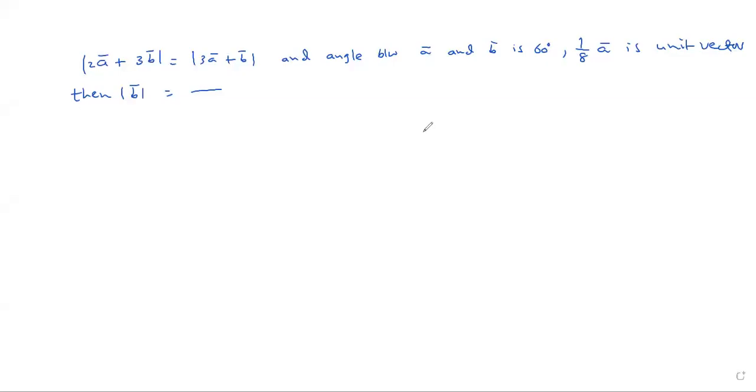So, here I try to use all given conditions. The first condition is this, and angle between A and B is 60 degrees, that is the second condition. And 1/8 A bar is unit vector, third condition. Using all these, find B.